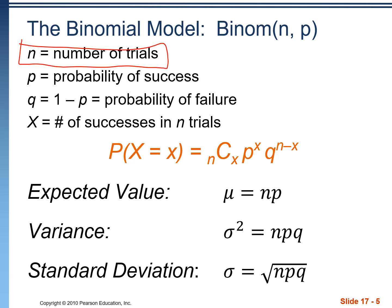And here's how we find expected value, variance, and standard deviation. You can see they're pretty simple equations. It's just N times P to find the mean, radical NPQ to find a standard deviation. And as always, variance is just the standard deviation squared.